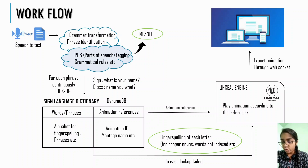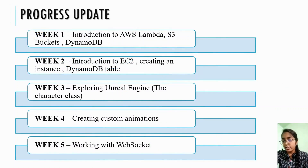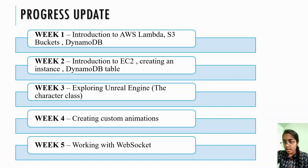This animation is exported through WebSocket to the front-end application. This is the progress update so far. In week 1, we explored AWS Lambda, S3 buckets, and DynamoDB by creating an AWS account and an IAM user. In week 2, we were introduced to EC2. We learned to create an instance, create a DynamoDB table, and do some scan and query operations. In week 3, we started the next phase by installing Unreal Engine and working on the environment, since we have to do most of the work with the character mainly. In week 4, we started creating custom animations. In week 5, we initiated working on WebSockets.